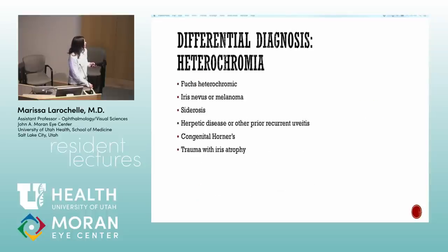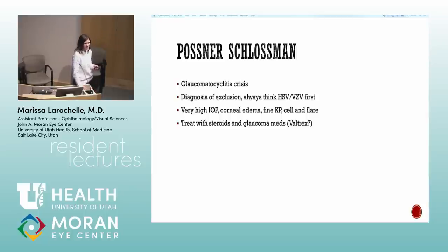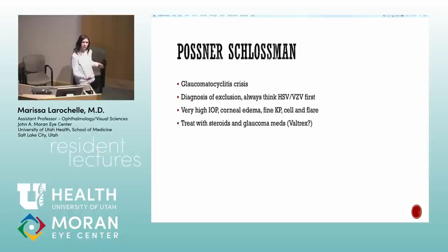Heterochromia in Fuchs develops over years — patients wouldn't necessarily present with it initially. If a patient comes in without heterochromia but with anterior chamber cells and is treated for what seems like HLA-B27 disease, it becomes clear over years that their eye color is changing and they've never had posterior synechiae — that's when Fuchs becomes more obvious.